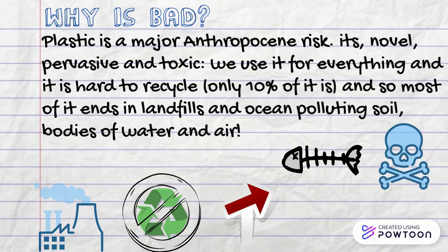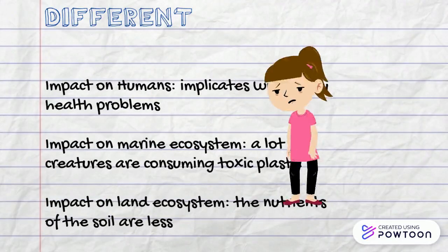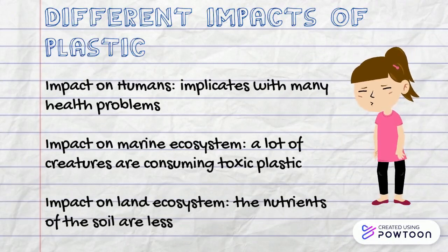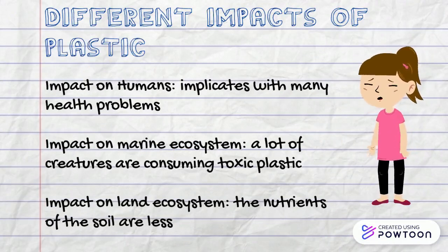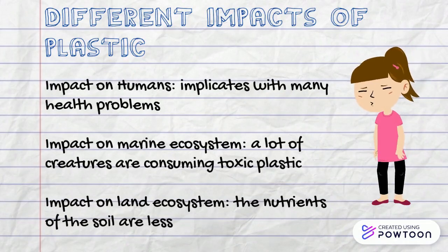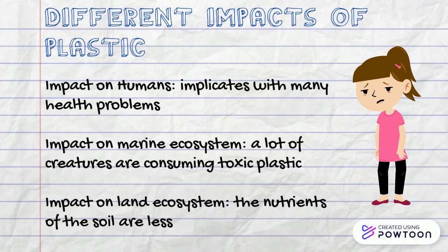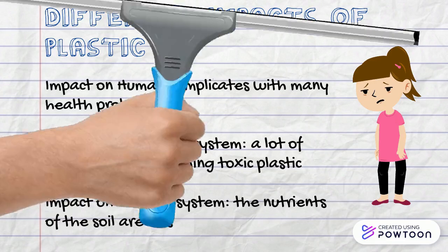Plastic affects marine life, ecosystems, and is even toxic for humans. Plasticizers are implicated in many cancers, metabolic, and behavioral disorders. In the marine ecosystem, most plastic waste ends up in the food chain, meaning large creatures end up consuming large amounts of toxic plastic. In the land ecosystem, bacteria and other organisms living in our soil are being exposed to microplastics, which reduces the nutrient capacity of the soil.